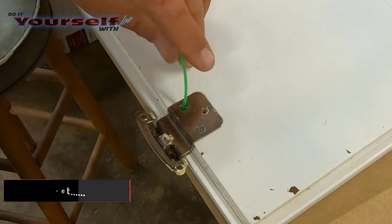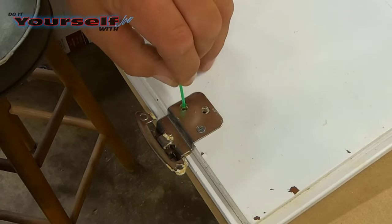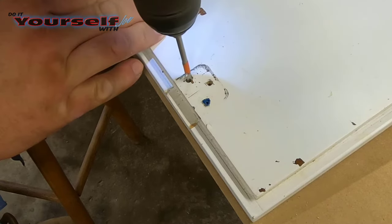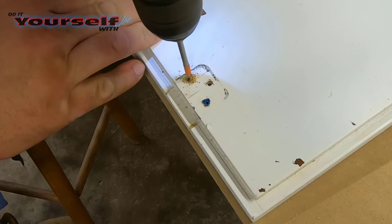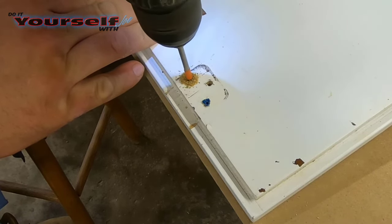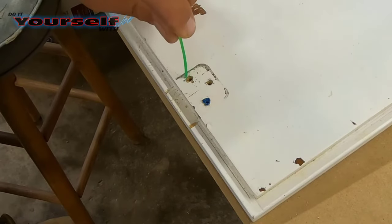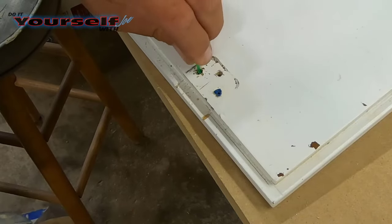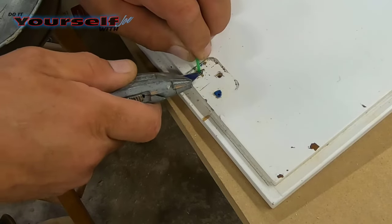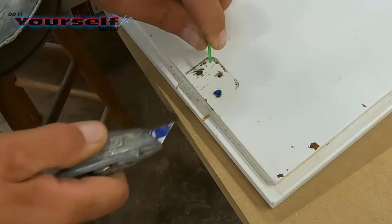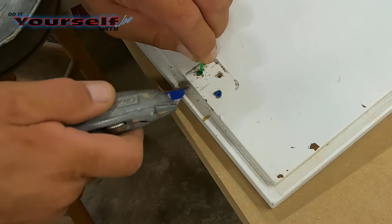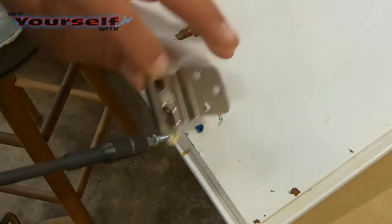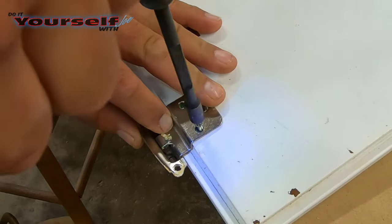Next method you can use is a weed whacker line. It's made of plastic and works really well as a plastic molly. First I'm going to drill the hole deeper to accept more of the plastic line. Now I'll install several pieces of line to fill the hole. Now I'm ready to reinstall the hinge.